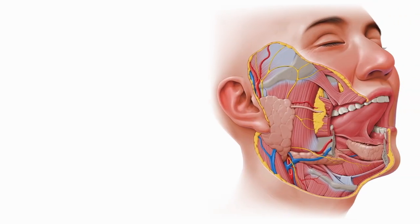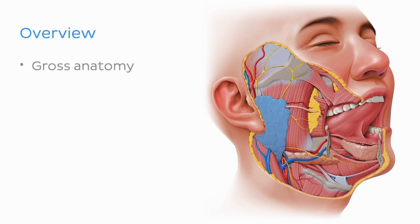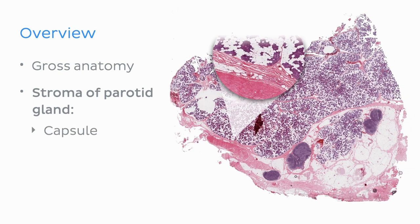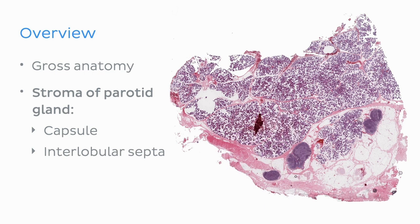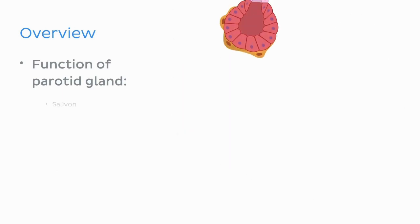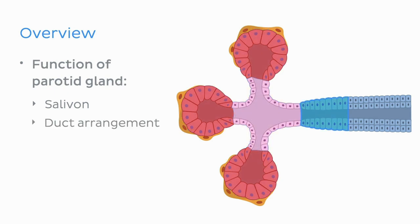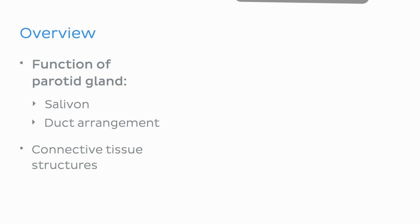We've already established what our topic is for the day, but let's take a deeper look at what we'll learn. We'll have a recap of the gross anatomy, location and function of the parotid gland. We'll then look at the tissue or stroma of the parotid gland, including its capsule, interlobular septa, and how they divide the parotid gland into lobules. Next up we'll look at the main functional unit of the parotid gland known as the salivon, and the duct arrangement within it. Finally we'll identify some structures housed in the connective tissue surrounding the parotid gland, and finish up with some clinical notes.